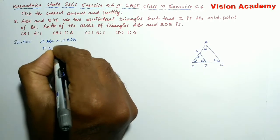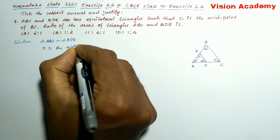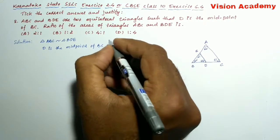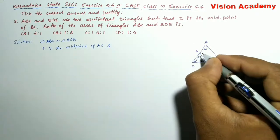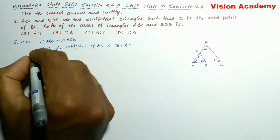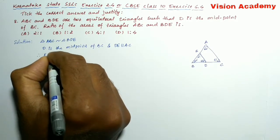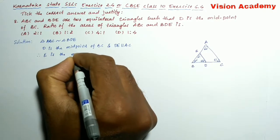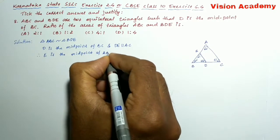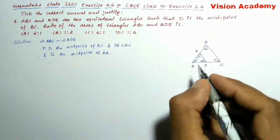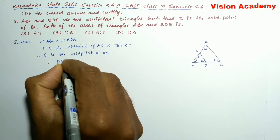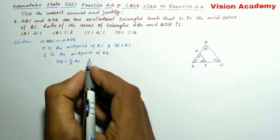So D is the midpoint of BC, and here DE is parallel to AC. Therefore E is the midpoint of AB. Therefore we can write DE is half of AC.